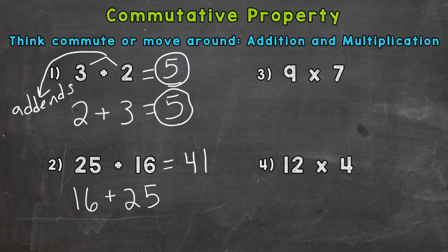Will 16 + 25 still give us 41? Yes, because addition is commutative. We are allowed to do that. Numbers three and four are both multiplication, so let's see if these problems are commutative as well.